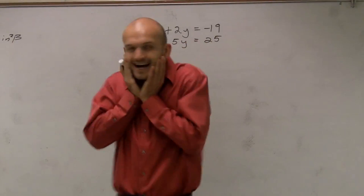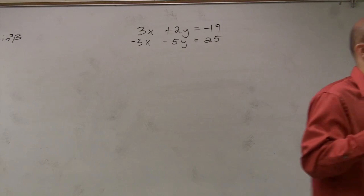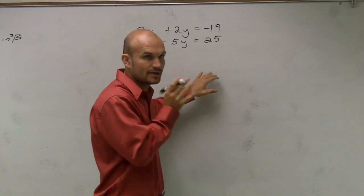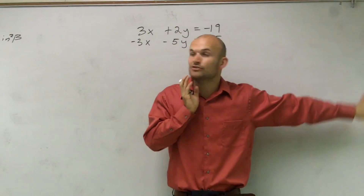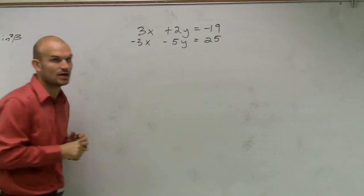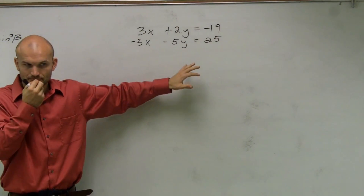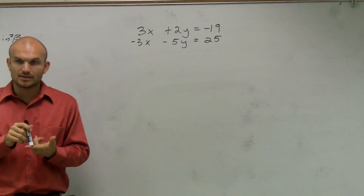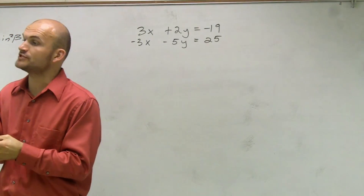Now we're going to work on solving a system by elimination. Previously we worked on substitution. I left these steps up there so you can write them down and use them when solving a system by using elimination. To solve using elimination, we can use it when our variables have the exact same coefficients in front of them. If they don't have the same coefficients, we're going to have to manipulate them.